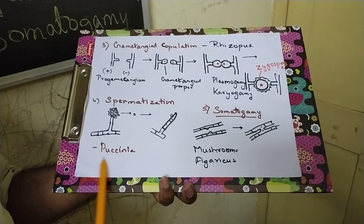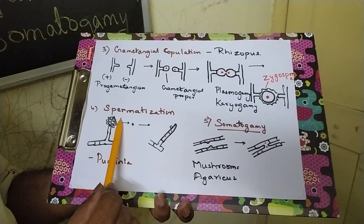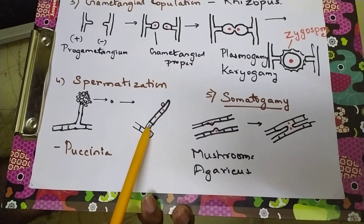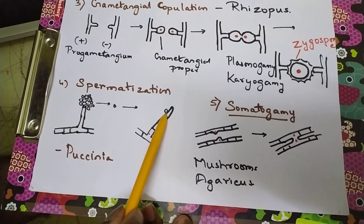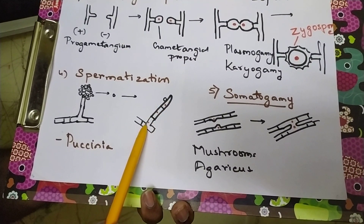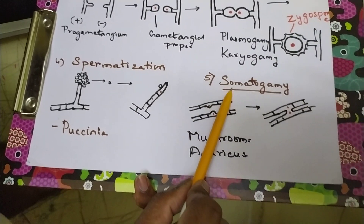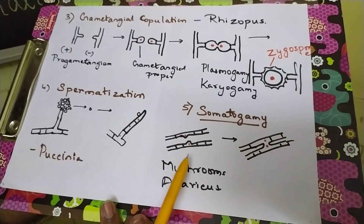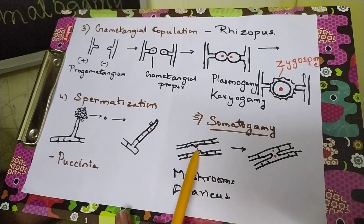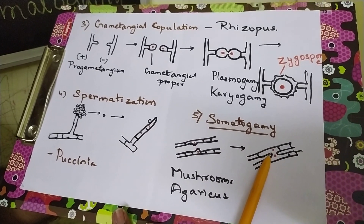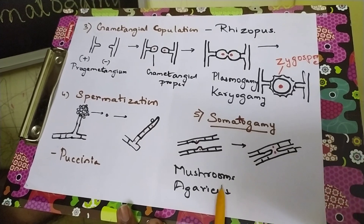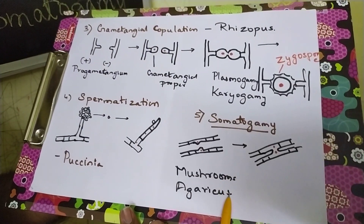Spermatization, exemplified by Puccinia, involves spores produced sexually that are released into the atmosphere or water, then come and fuse with another hypha of different genetics — the nuclei fuse in a sperm-like manner. Somatogamy, the fifth type, involves two genetically different strains coming closer; one cell shows a protrusion, fuses, and becomes diploid. Somatogamy is found in Agaricus and other mushrooms, as well as in Basidiomycetes.